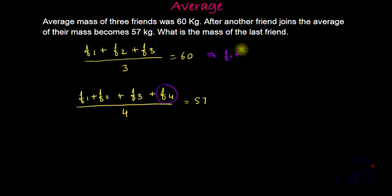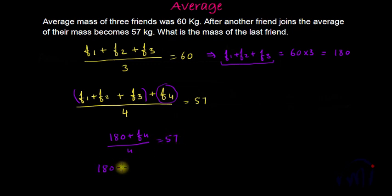From here we can say f1 plus f2 plus f3 is equal to 60 multiplied by 3, which is 180. If I substitute the value of f1 plus f2 plus f3 over here, I can find the value of f4. In place of f1 plus f2 plus f3, I am going to write 180 plus f4 divided by 4 is equal to 57, or you can say 180 plus f4 is equal to 57 multiplied by 4, which is equal to 228. So from here you can say f4 is equal to 228 minus 180, that is 48 kgs. So quite simple.